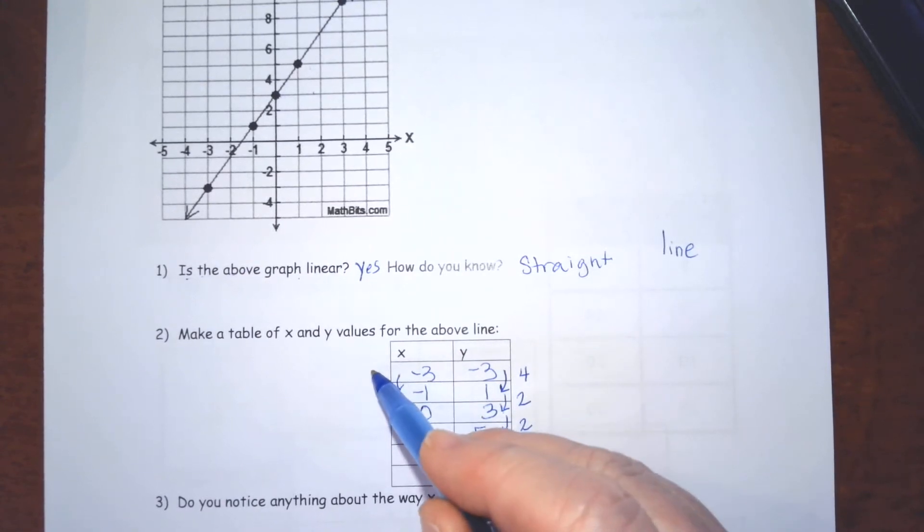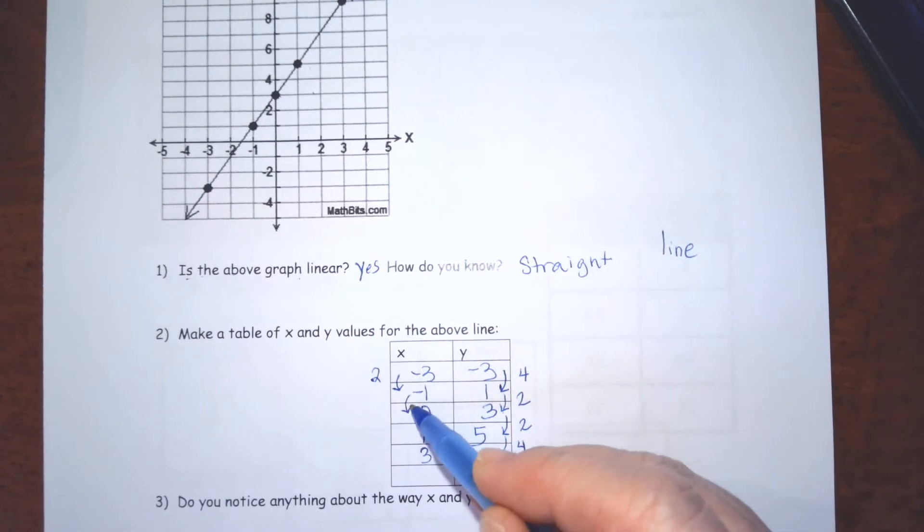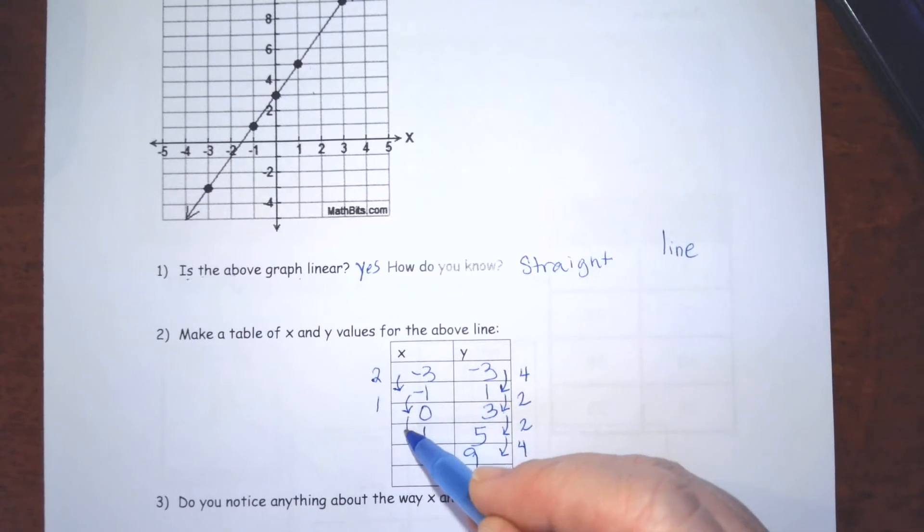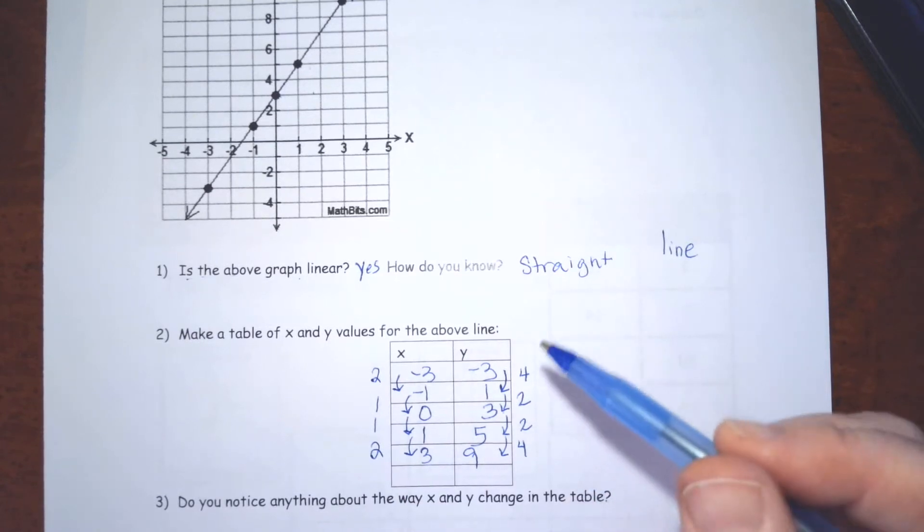And then we're going to look at the way the x values change. From negative 3 to negative 1, it goes up 2. From negative 1 to 0, it goes up 1. From 0 to 1, it goes up 1. And from 1 to 3, it goes up 2.